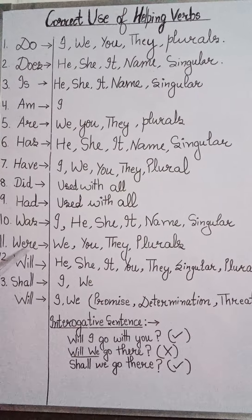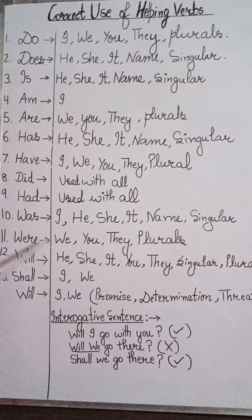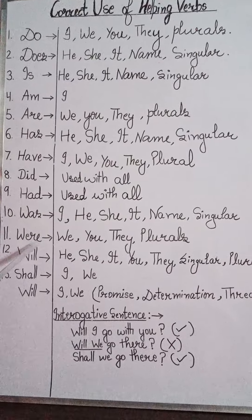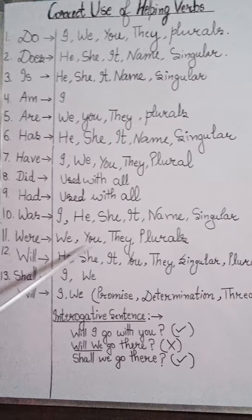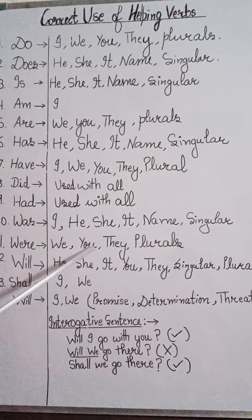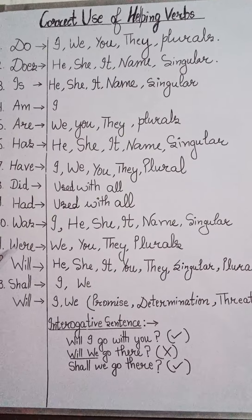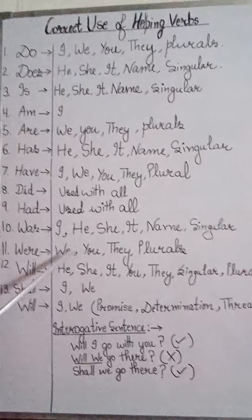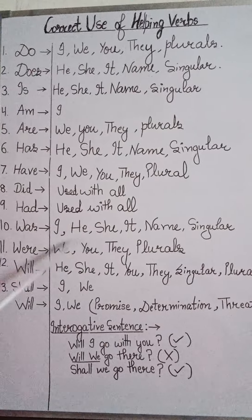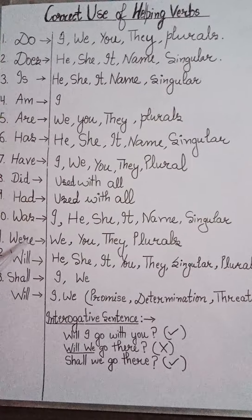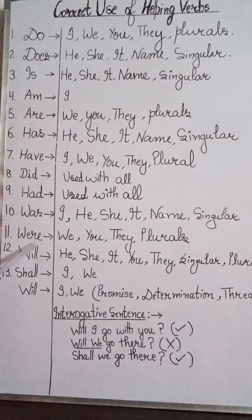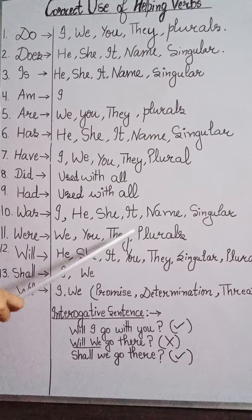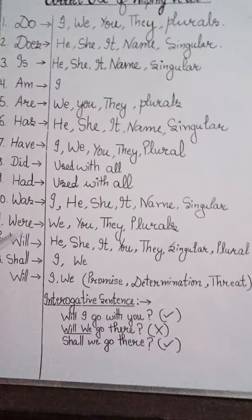'Were' का meaning होता है 'थे।' 'Were' का use 'we' के साथ होता है जैसे 'we were going to the park।' 'You' के साथ — चाहे singular के लिए use हो या plural के — was और were में से 'were' ही लगाना है, जैसे 'you were telling a lie।' 'They' के साथ भी 'were' लगेगा जैसे 'they were coming to our house।' Plurals के साथ भी 'were' का use होता है जैसे 'boys were playing in the park।'